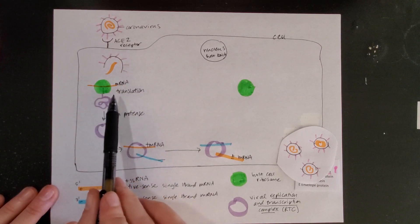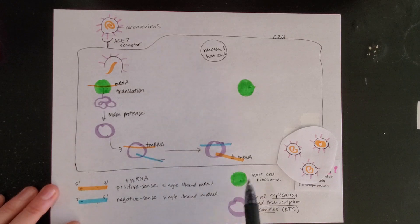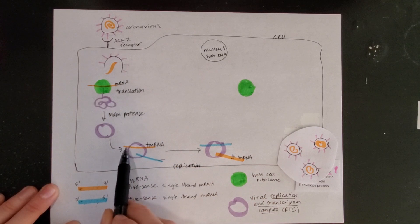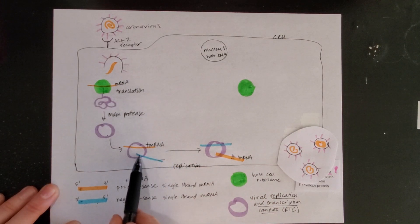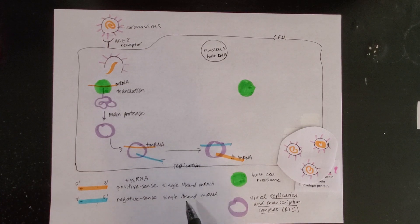Another thing we can do when we generate more of this positive mRNA is send it back up here through the ribosome and make more of these replication and transcription complexes. These processes here are both called replication - taking a full strand of mRNA and making a complementary strand.